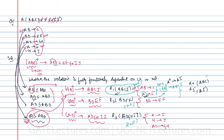For R4, the applicable functional dependency is AB determines C — there is no partial functional dependency here. For R5, A determines I is applicable. In R2, the only functional dependency is BD determines EF, and there is clearly no partial functional dependency occurring. So R4, R5, and R2 are each in 2NF.